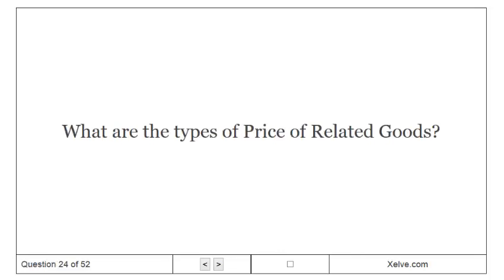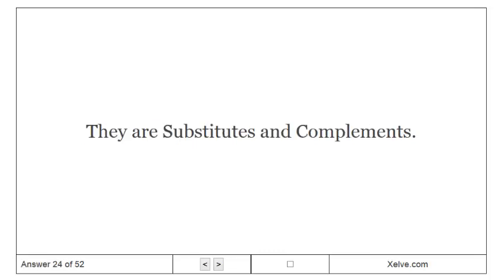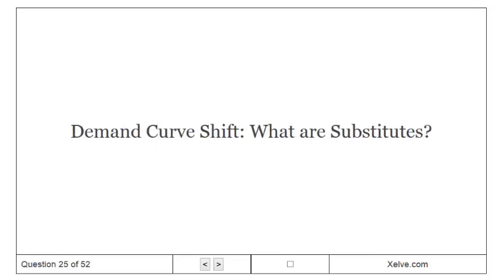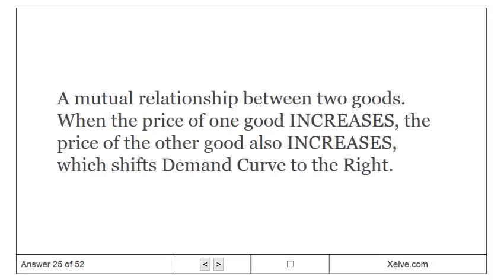What are the types of price of related goods? They are substitutes and complements. What are substitutes? A mutual relationship between two goods. When the price of one good increases, the price of the other good also increases, which shifts the demand curve to the right.